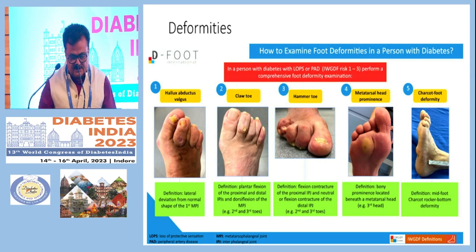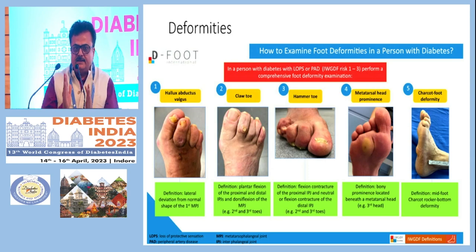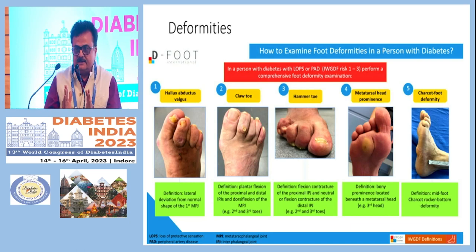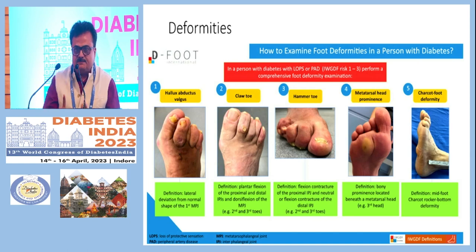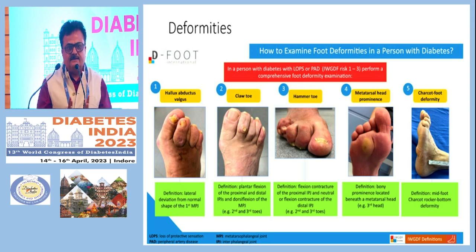This is hammer toe or hallux rigidus. The great toe plays a very important role in the walking cycle — in fact 50 percent of weight-bearing during walking is through the great toe. When this toe becomes rigid, there is continuous high pressure on the ball of the great toe, so 40 percent of foot ulcers occur in the ball of the great toe. This is Charcot foot — one of the highest-risk categories — and these patients are often missed by clinicians, ultimately landing up in amputation.